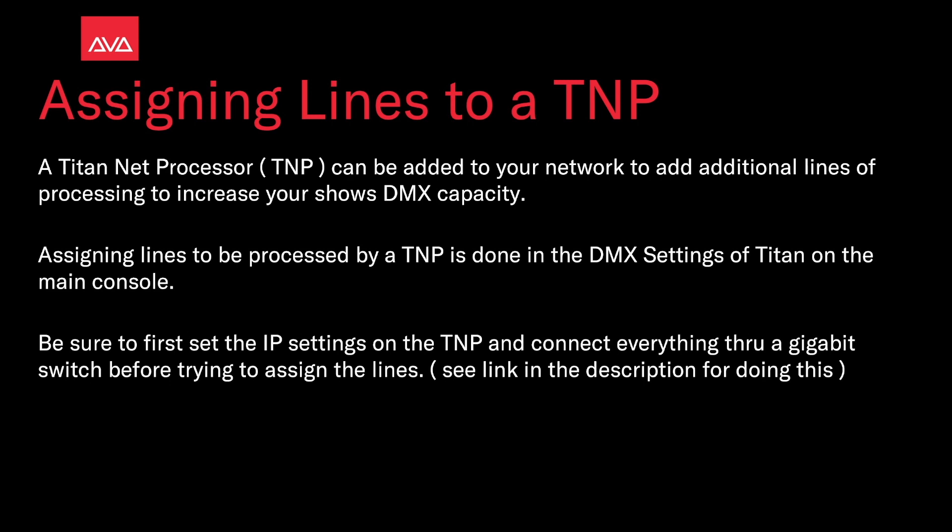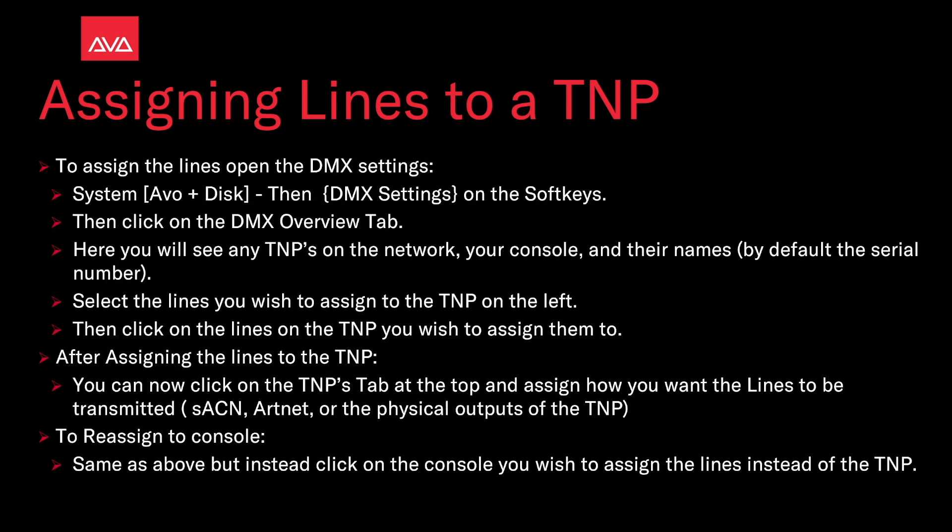Assigning lines to be processed by a TNP is done in the DMX settings of Titan on the main console. Be sure to first set the IP settings on the TNP, and connect everything through a gigabit switch before trying to assign the lines — see the link in the description for doing this. To assign the lines, open the DMX settings by pressing the system key or AVO plus disk, then DMX settings on the soft keys, then click on the DMX overview tab.